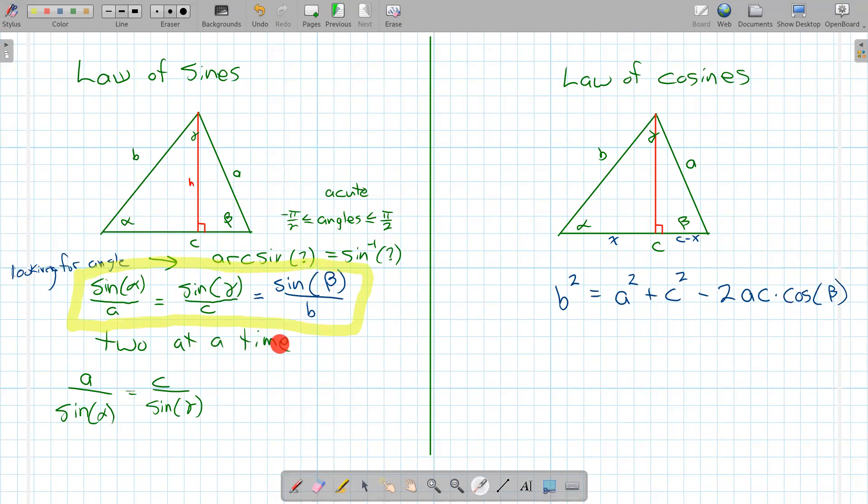We use this two at a time. And if we're looking for an angle, we always get to realize that the arc sine only gives us acute angles, does not give obtuse angles. So if we're ever looking for an obtuse angle, then we have to do a little circle symmetry to try and find that obtuse angle. And we'll see some examples of that later.